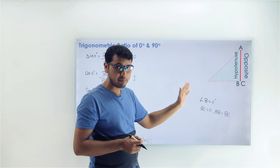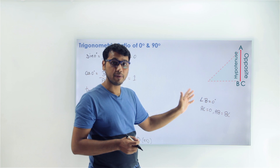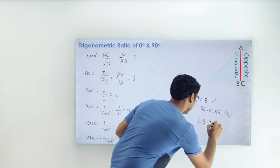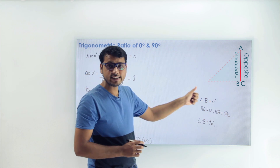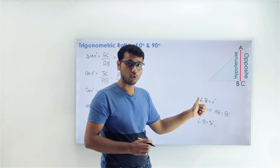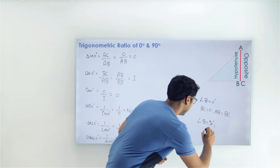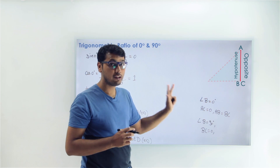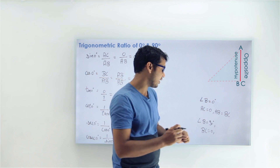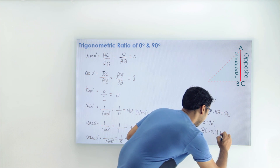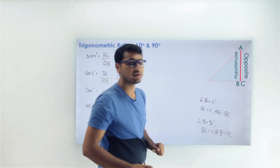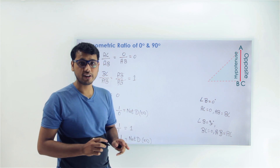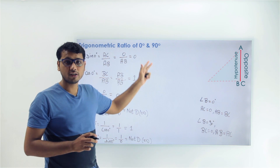So when point B merges with AC, angle B becomes equal to 90 degrees. At this point, side BC which was our adjacent becomes 0, so its length becomes 0. Also, our hypotenuse AB becomes equal to the opposite AC. So we now have all the values for opposite, hypotenuse, and adjacent, and we can find all the trigonometric ratios for 90 degrees.